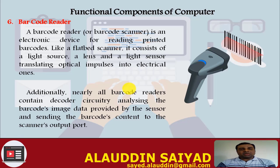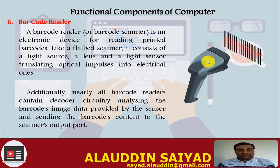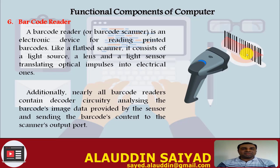Barcode Reader. A barcode reader or barcode scanner is an electronic device for reading printed barcodes, similar to flatbed scanners. It consists of a light source, a lens, and a light sensor that translates optical impulses into electrical signals. Nearly all barcode readers contain decoder circuitry that analyzes the barcode image data provided by the sensor and sends the barcode contents to the scanner's output port, which then supplies the data to the central processing unit. This handheld barcode scanner is commonly used in shopping malls for fast billing — it scans the product code and loads the price, manufacturing date, expiry date, and other details directly into the bill.